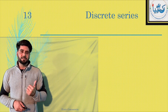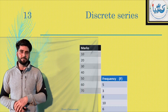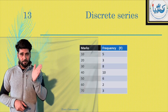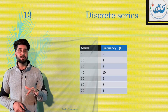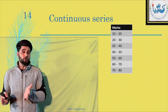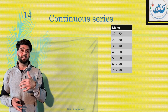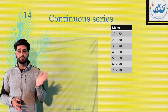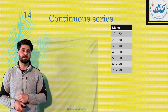Second one is discrete series — wahaan pe variable bhi hoga aur uske saath frequency bhi hogi. So when you talk of 10, frequency is 5; 20, frequency is 3 — ise kehte hai discrete series. And when you talk of continuous series, it is like 10 to 20, 20 to 30, 30 to 40, 40 to 50. 10 to 20 means 10.1 is also there, 19.6 is also there. Jab is tarah ki series hogi, toh use kehte hai continuous series.